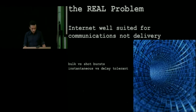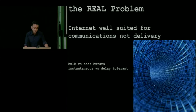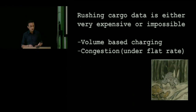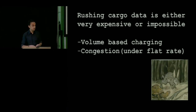So what is the real problem? The internet was not well suited for delivery. It was well designed for communications, but designed with short and instantaneous delivery in mind. What we're seeing with large files is bulk and delay-tolerant traffic. If you're trying to rush these large data files over the network, it's either very expensive or impossible — you either get charged a lot of money due to volume-based charging, or you experience congestion in different parts of the network.